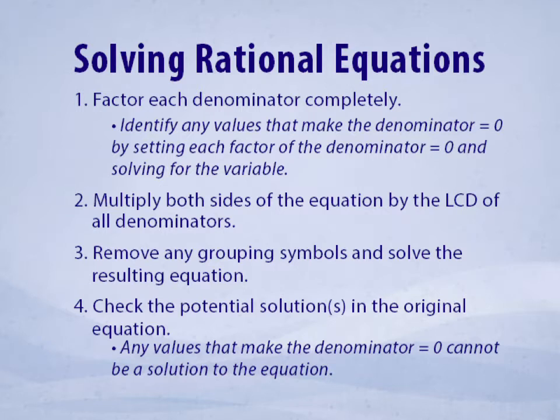Then we'll multiply both sides of the equation by the least common denominator of all denominators. We will remove any grouping symbols and solve the resulting equation. Lastly, we'll check the potential solutions in the original equation. Any values that make the denominator zero cannot be a solution of the equation.